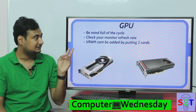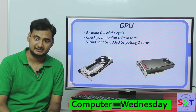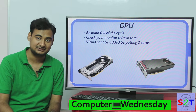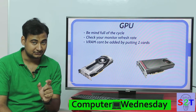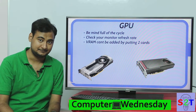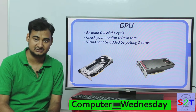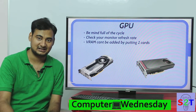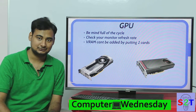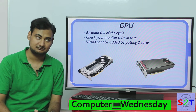Check your monitor's refresh rate before buying a powerful graphics card. If your monitor only supports 60 Hz, don't buy a high-end card. Also, understand that VRAM cannot be combined across two graphics cards. If a game stores texture data in VRAM, both cards hold the same data — so two 4 GB cards don't give you 8 GB of usable VRAM. Buy as much VRAM as you can in a single card.